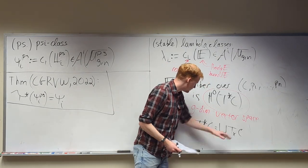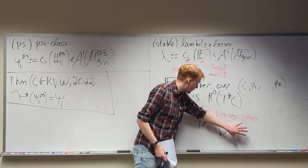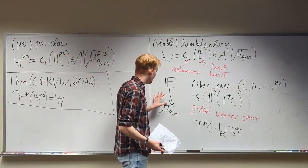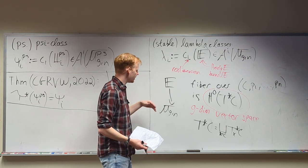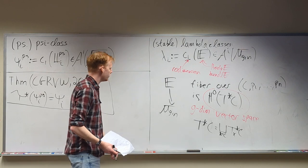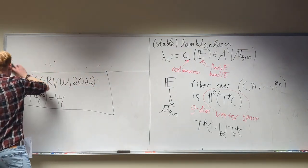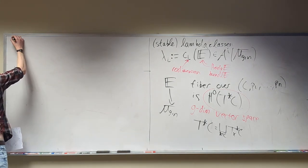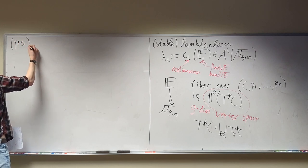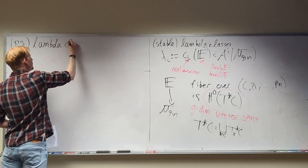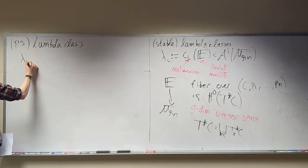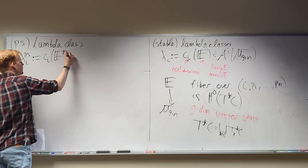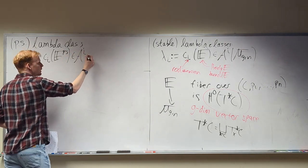The pseudo-stable version is defined in the exact same way, and the question is: what is the pullback of that? A pseudo-stable lambda class — same definition, just starting with a pseudo-stable curve instead of a stable curve. We pull it back, and this is another theorem due to the same group of people in the same paper.